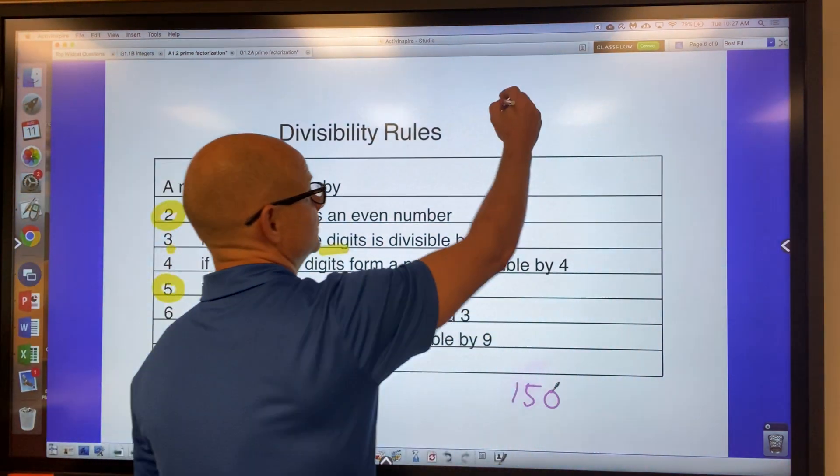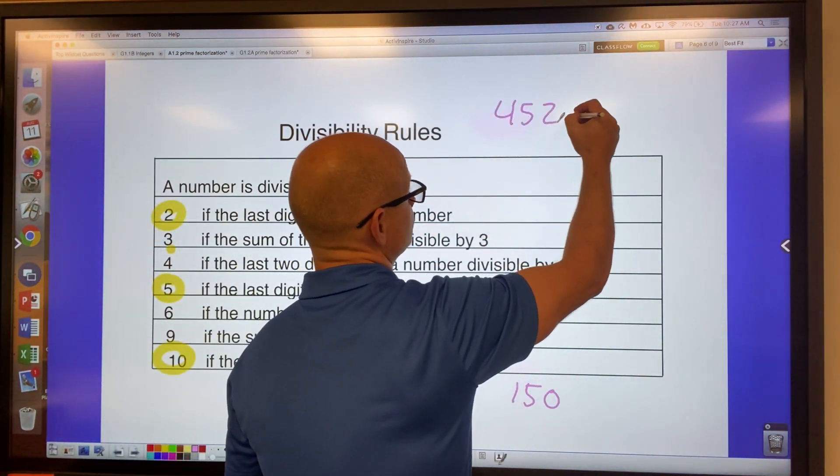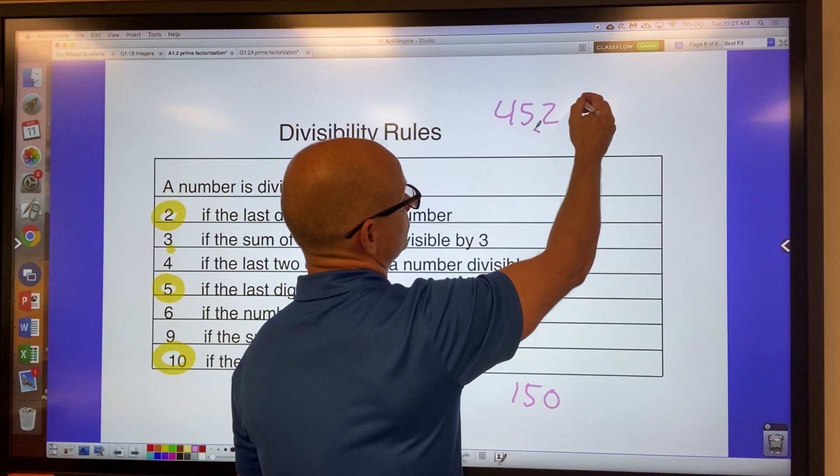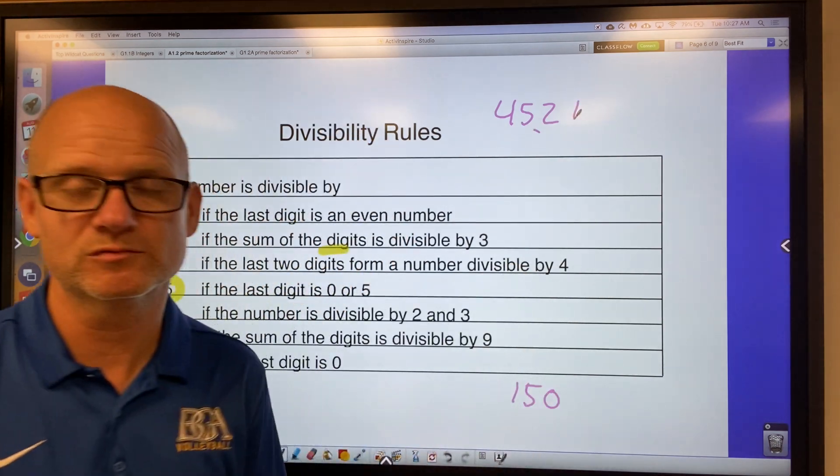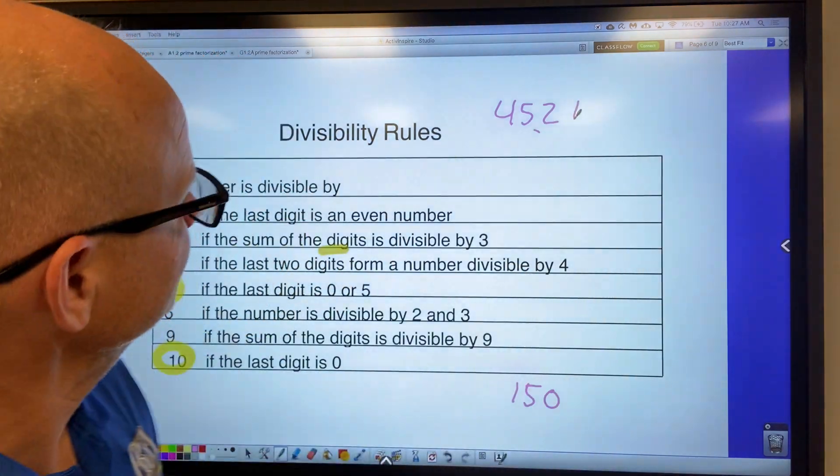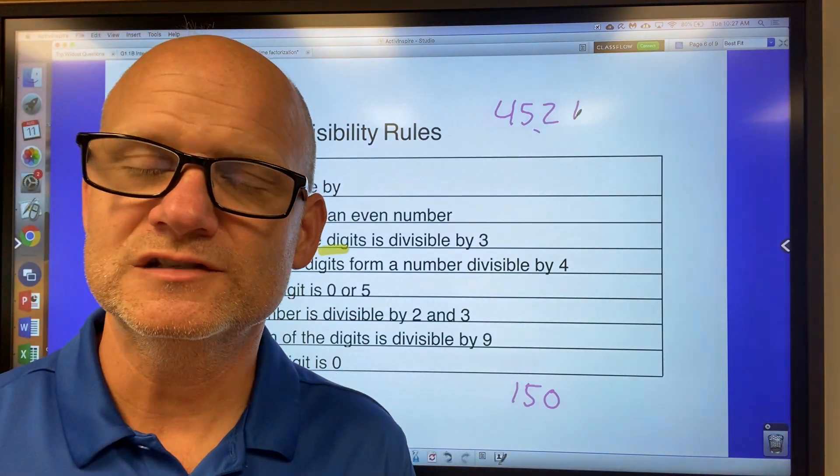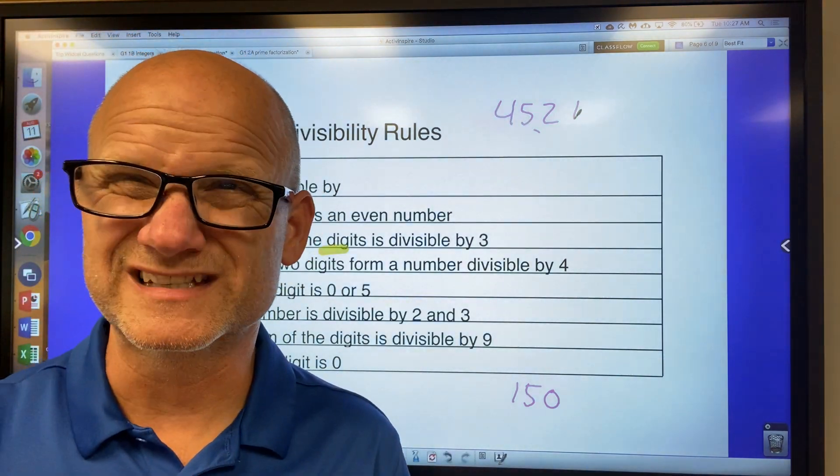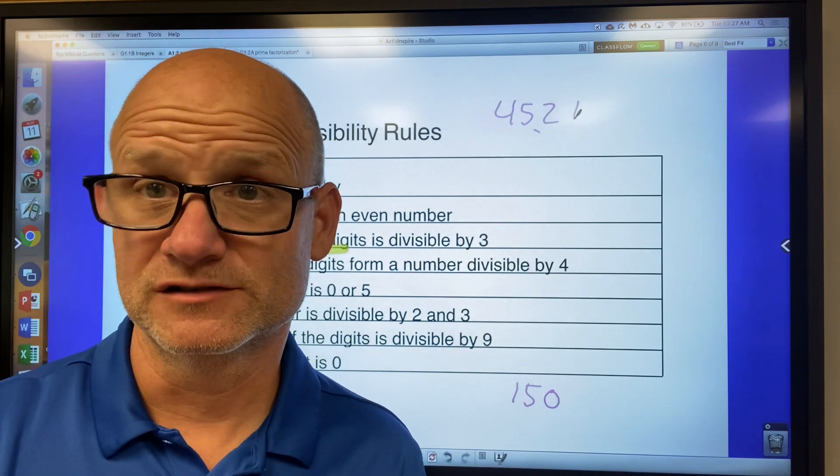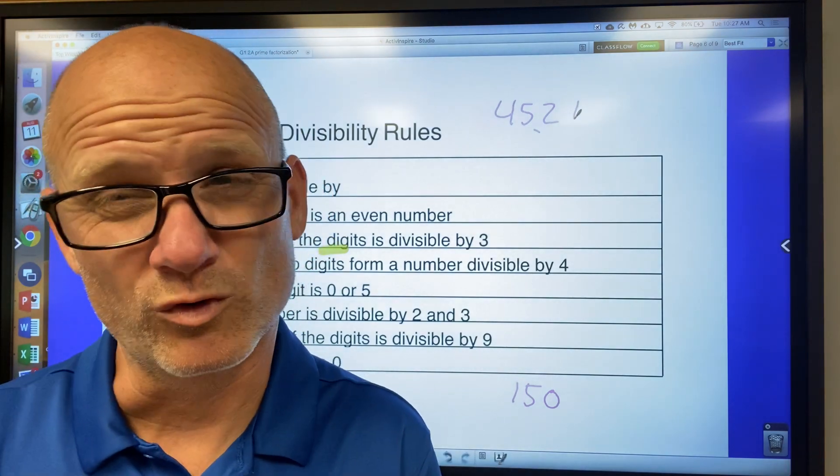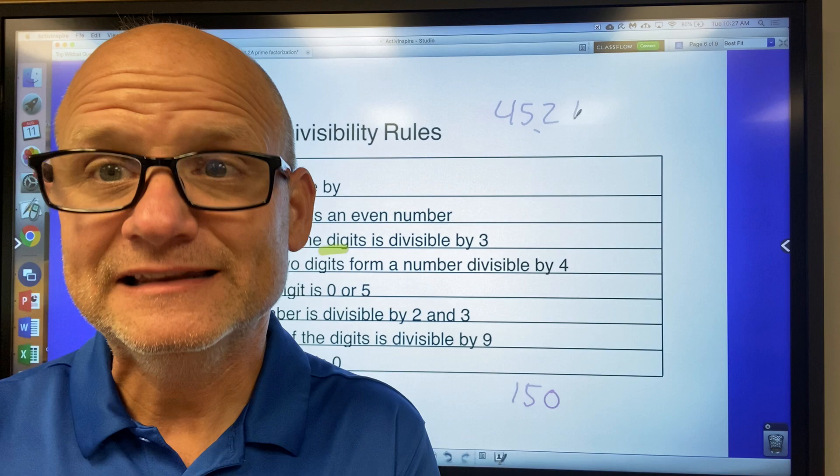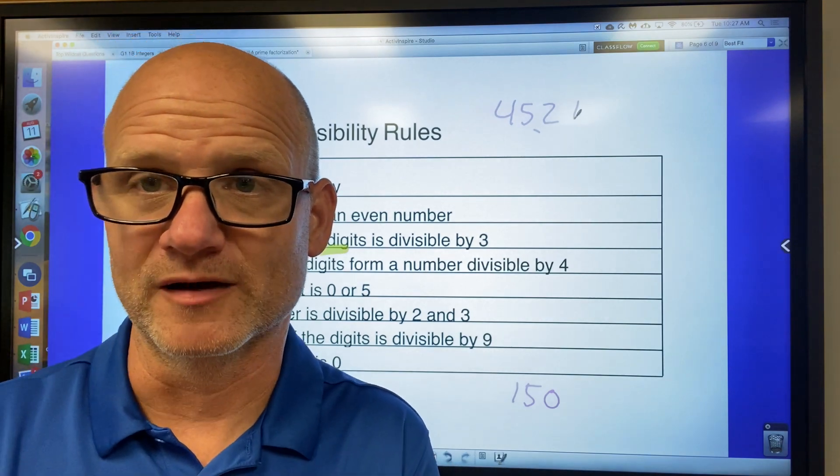I can write this number. 4521. That number there is divisible by 3. Because the sum, I think, is 12. Is that right? 10, 12. Yeah. So when the sum of the digits is a multiple of 3, or divisible by 3, then the number is divisible by 3. Okay?